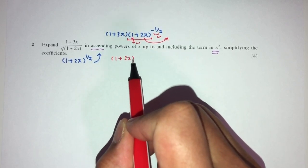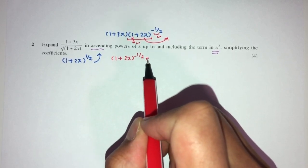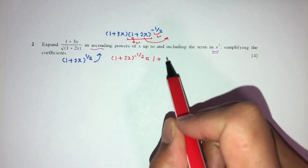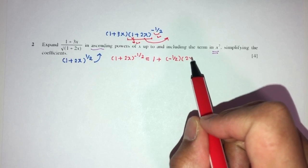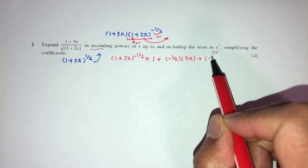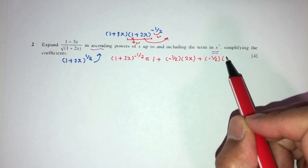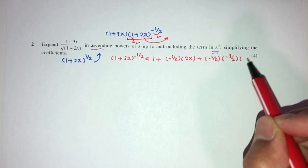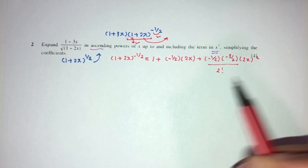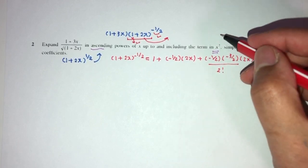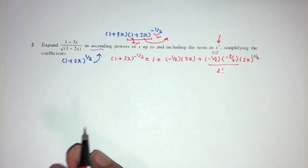So 1 plus 2x, power minus half will be what? That will be 1, plus n, which is minus half here, x will be 2x, plus the value of minus half minus 1 again. That will be minus 3 over 2, times 2x squared divided by the value of 2 factorial. Now, we can stop right here because we only need the term in x squared. We don't need to go past this one.